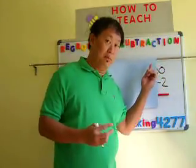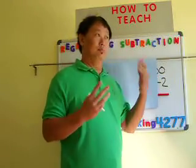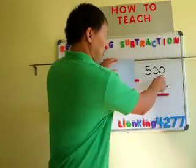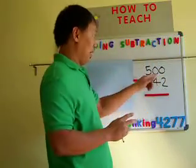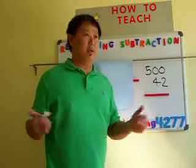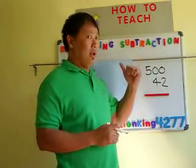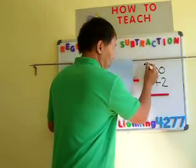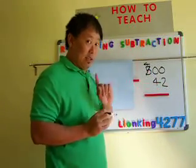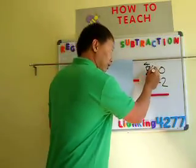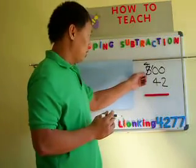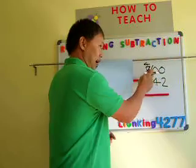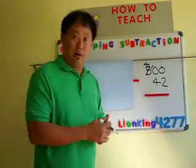Again, let's look: is the top number bigger than the bottom? The top number is 0 and we're taking away 2 — we can't subtract. So zero is going to ask the neighboring zero: 'Can I borrow some money?' That zero says: 'I'm sorry, I don't have any money.' So we go ask 5 — and 5 says: 'Sure, I'll let you borrow.' 5 becomes 4, but we don't throw the money — it's not polite. We give it first to the nearest zero.